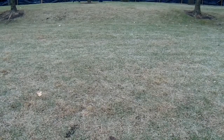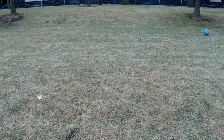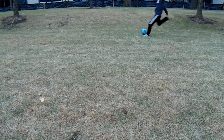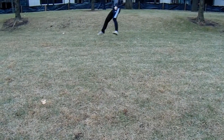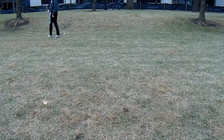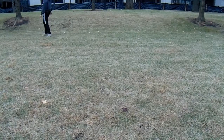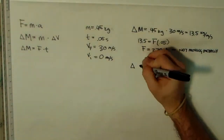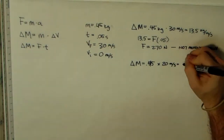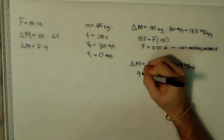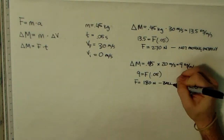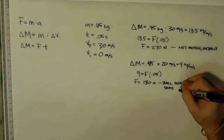We then repeated these steps to find the force needed to kick a ball already moving in the direction it wants to be kicked. The mass, final velocity, and contact time remain the same. However, the change in velocity falls to 20 meters per second, as the ball is already moving at 10 m/s in the kick direction. From this calculation, we found that 180 newtons of force is needed to cause the ball to travel at 30 meters per second if it has an initial speed of 10 meters per second.